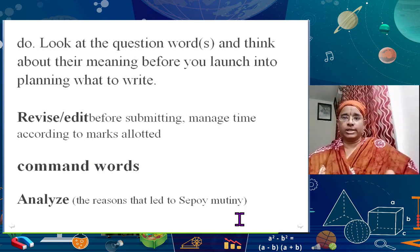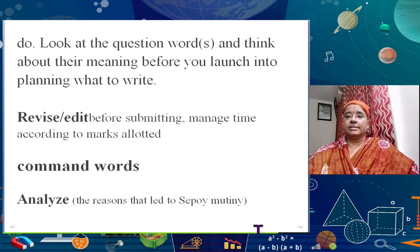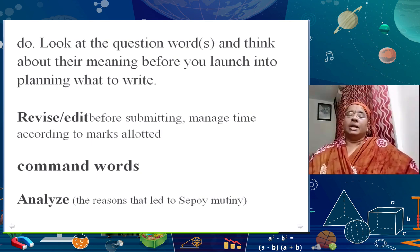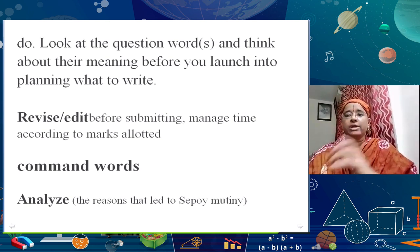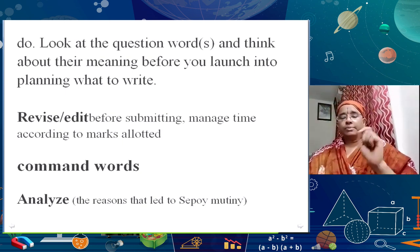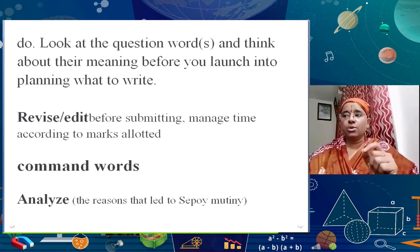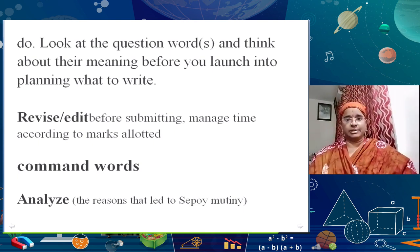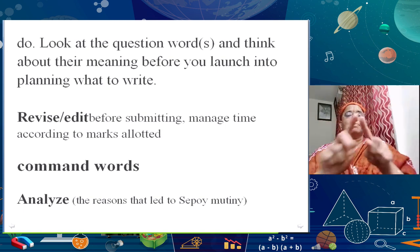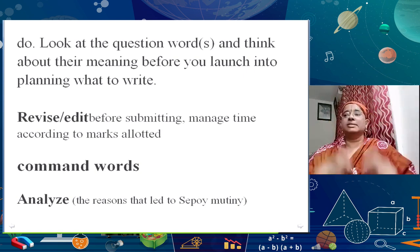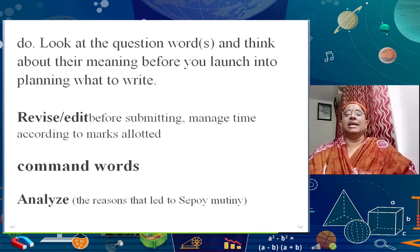So these are the command words. Let us look at the first one: analyze. For example, 'Analyze the reasons that led to the Sepoy Mutiny.' What you are supposed to do with the word 'analyze' is examine in detail to show meaning and identify elements and the relationship between them. That is what analysis means — if this word is present in any kind of question, in whatever subject, this is what you are expected to do, and this is what you are expected to write in your answer.